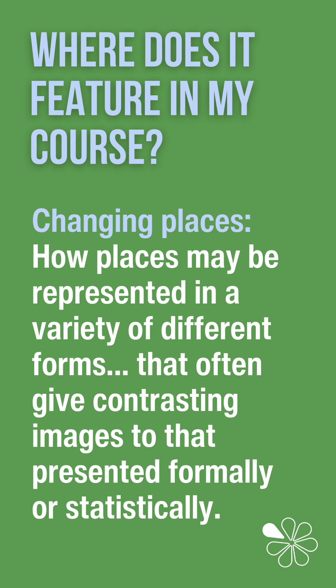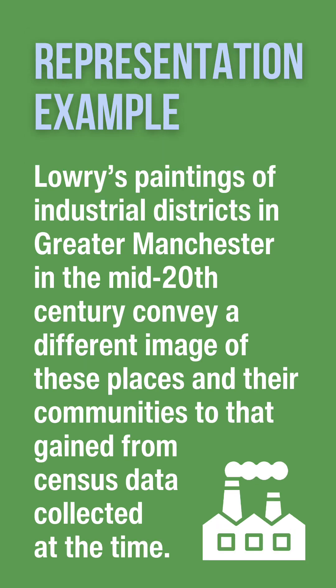Representations come in various forms, from official government data to personal narratives and artistic expressions, which often give contrasting depictions. An example of representation is Lowry's paintings of industrial landscapes and urban communities, which show a very different portrayal of Greater Manchester in the mid-20th century than official census data collected at the time.